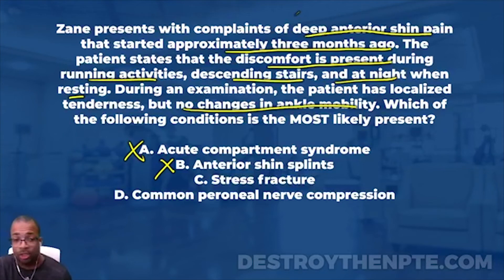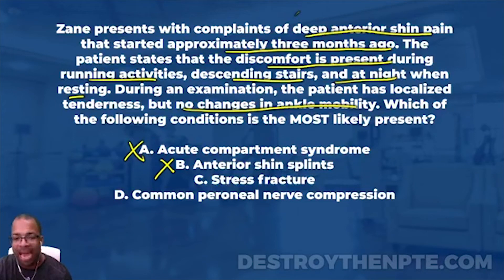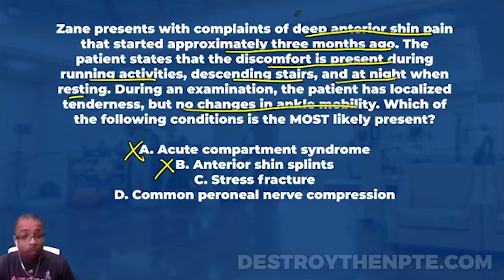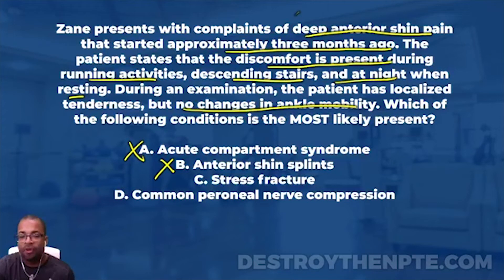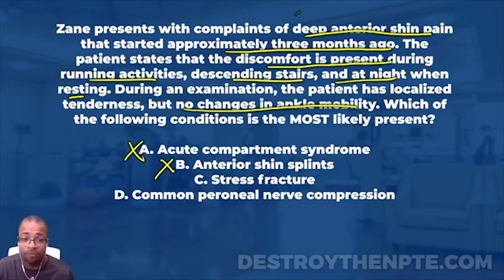C says stress fracture. For those unfamiliar, a stress fracture is a small bone fracture - a lot of times we can't even find it on X-ray in the early phases. They often call this a stress reaction. We get this because of repetitive loading, like running or jumping. Can we get pain during running? Yes, definitely. Can the pain be present during descending stairs? Yes - if you're loading that leg and striking with the heel on the next step, that could light up a stress fracture for sure.